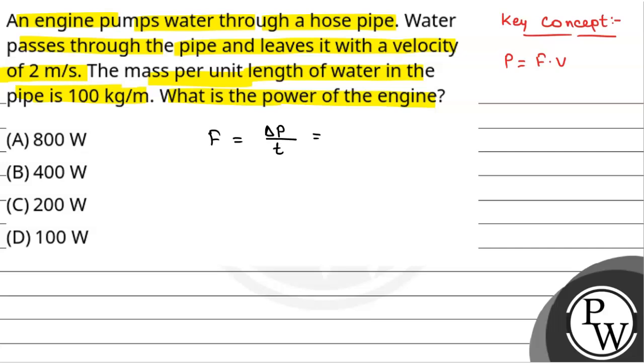Now, we have been given that the velocity of the water which leaves the hose pipe is 2 meter per second. So, that will be mv and initially the water was at rest. So, mv minus 0 by time t. So, this will be equal to mv by t. This is the force.